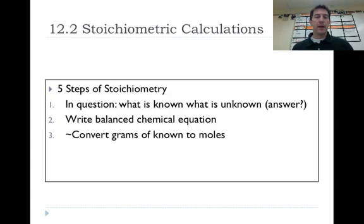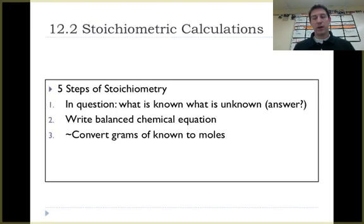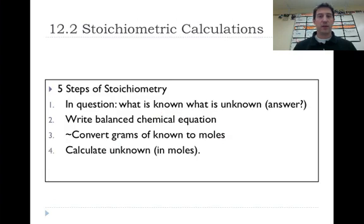So make sure you get that part down and then I need to convert grams of the known into moles. So whatever my known is, if it's given to me in grams, all stoichiometry needs to be done in moles so I need to convert it. Now I've put a squiggly here because if in my question I already have it in moles, I don't have to do step number three. I can move right on to step number four.